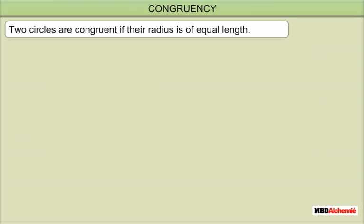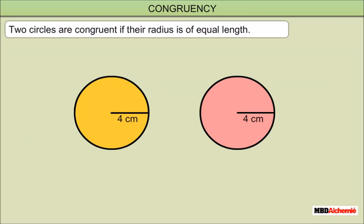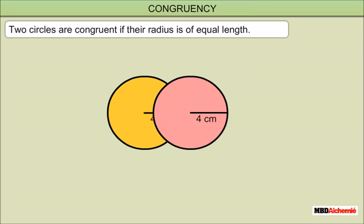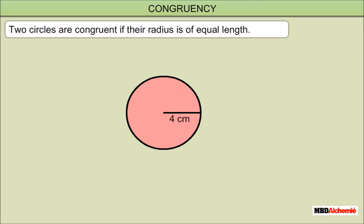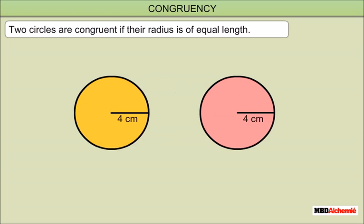Two circles are congruent if their radius is of equal length. For example, the circles shown here are of the same radii, thus they are congruent.